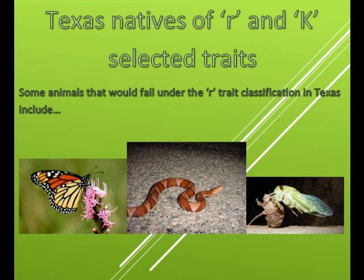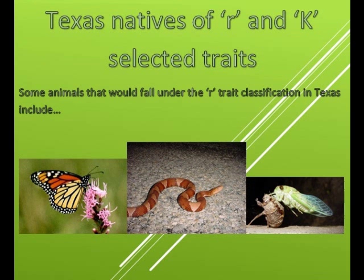Texas natives of R and K-selected traits. Some animals that fall under the R-selected classification in Texas include the monarch butterfly, the copperhead snake, and the cicada. Texas K-selected species would include deer, coyotes, and a ring-tailed cat.